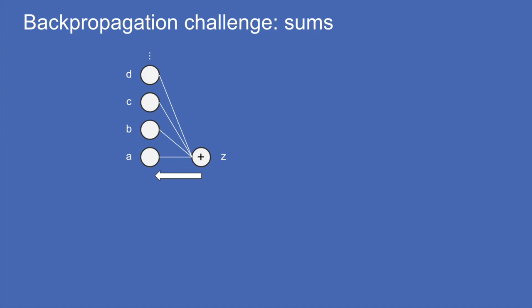Another element is sums — all of our neurons sum up a lot of inputs. To take this back propagation step, we write our expression and take the derivative of the endpoint Z with respect to A. dZ/dA is just 1, which makes sense: if we have a sum of a whole bunch of elements and we increase one of those elements by 1, we expect the sum to increase by 1 — that's a slope of 1.